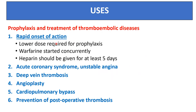Parenteral anticoagulants should be used as prophylaxis in treatment of thromboembolic disease, given their rapid onset of action. A lower dose is required for prophylaxis. Warfarin is started concurrently because its action is delayed; at that time prophylactic heparin or low molecular weight heparin can act, and it should be given for at least 4 to 5 days. Indications include acute coronary syndrome, unstable angina, deep vein thrombosis, angioplasty, cardiopulmonary bypass, and prevention of post-operative thrombosis.